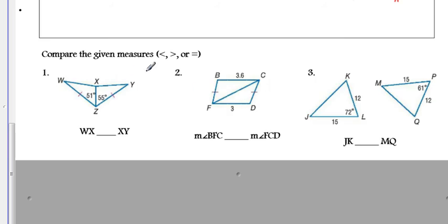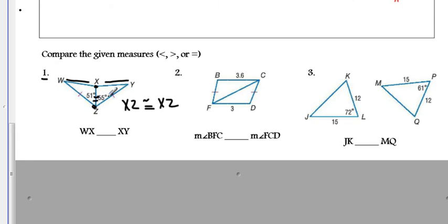Let's do example problems. Number one: compare WX to XY. Side WZ is congruent to ZW, and XZ in both triangles is congruent because it's shared — XZ has to be congruent to XZ. So WX is opposite the 51-degree angle, and XY is opposite the 55-degree angle. Because WX is opposite the smaller angle of 51, WX is less than XY, which has an opposite angle measure of 55.